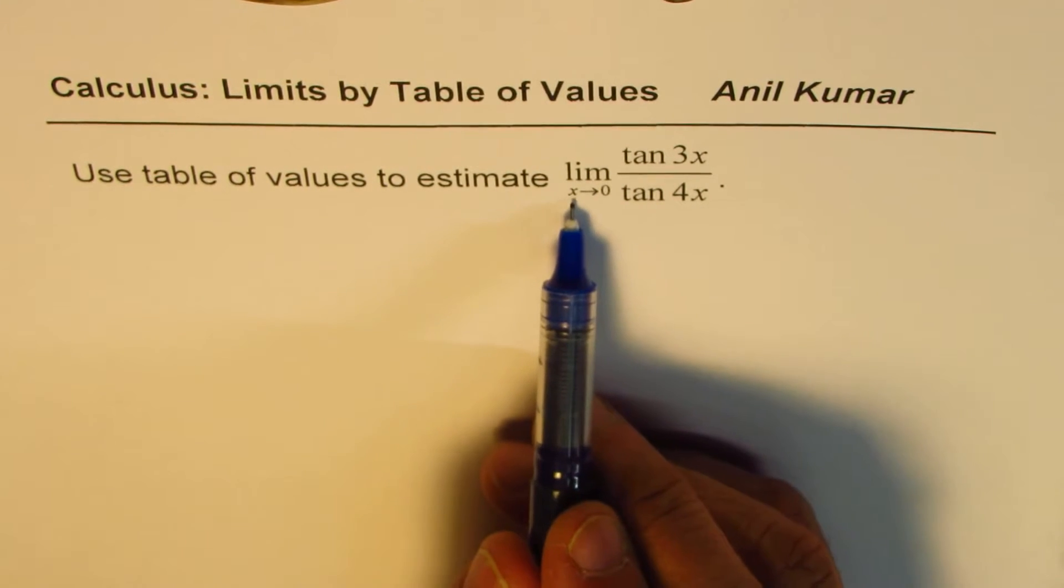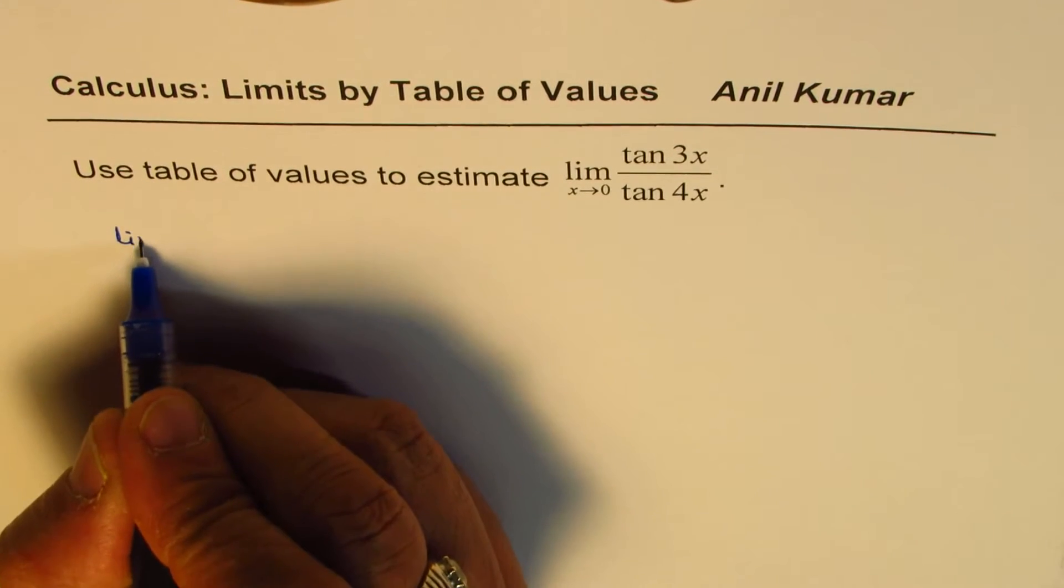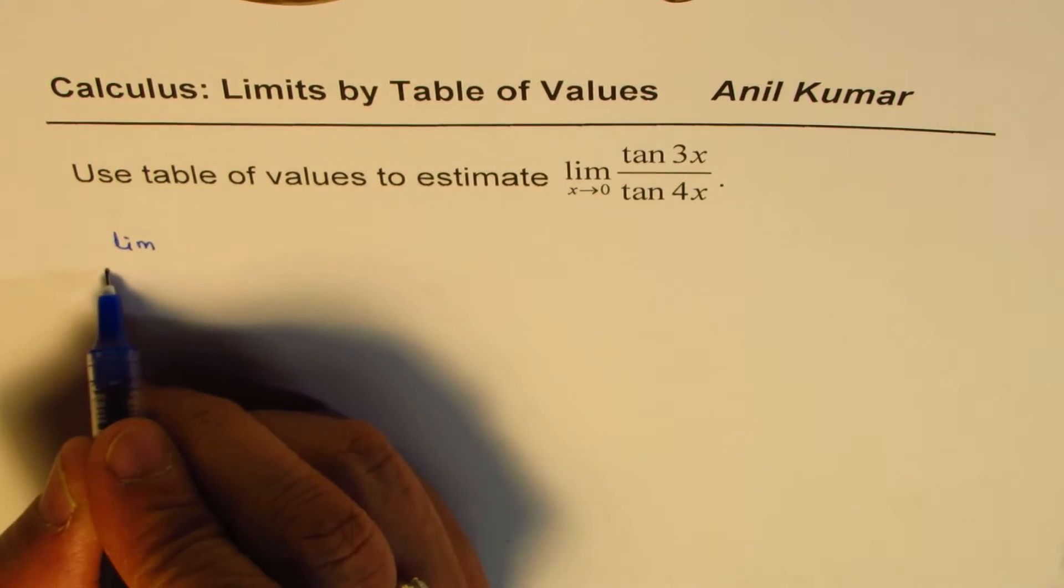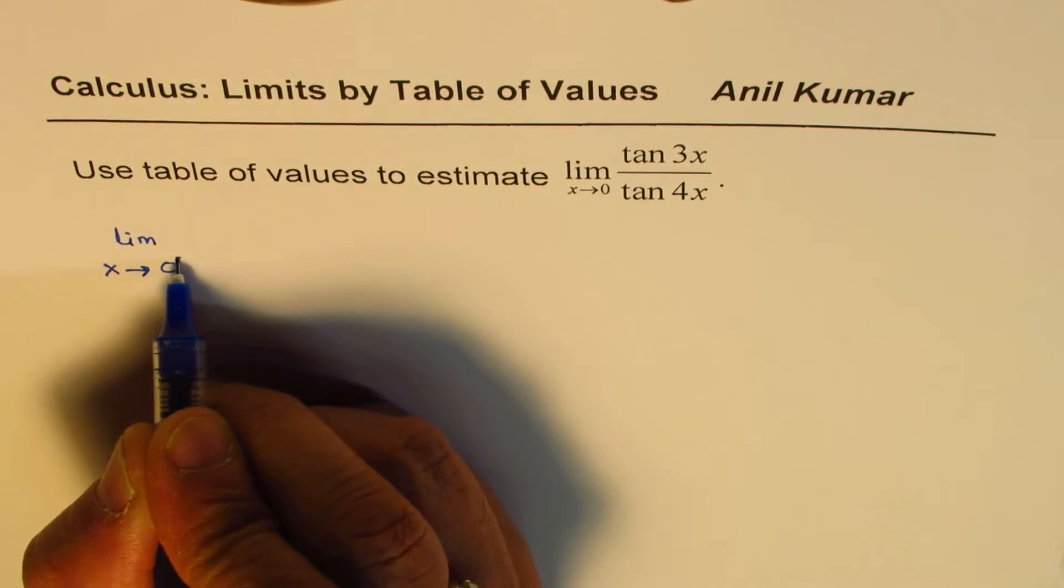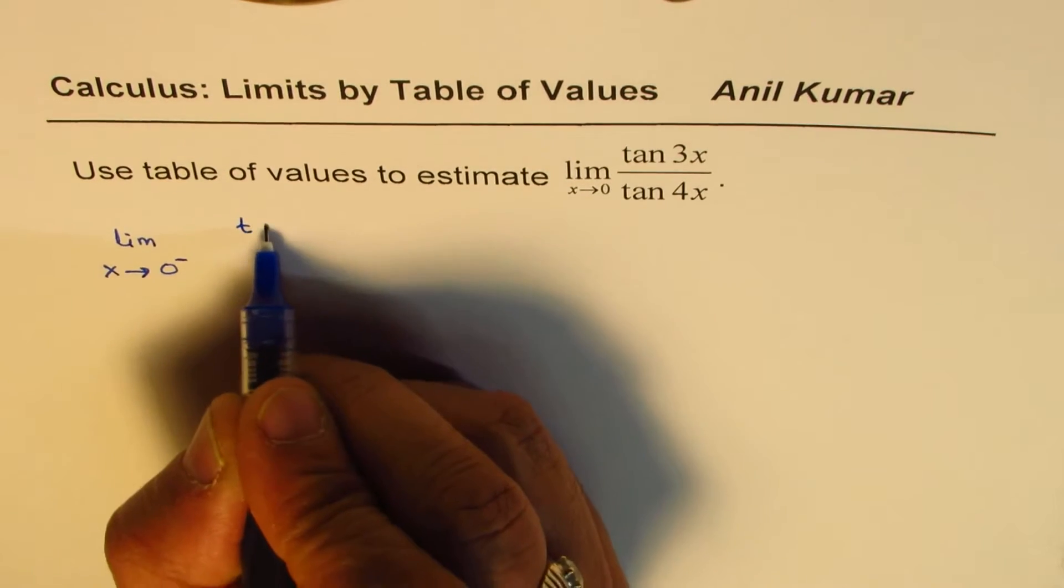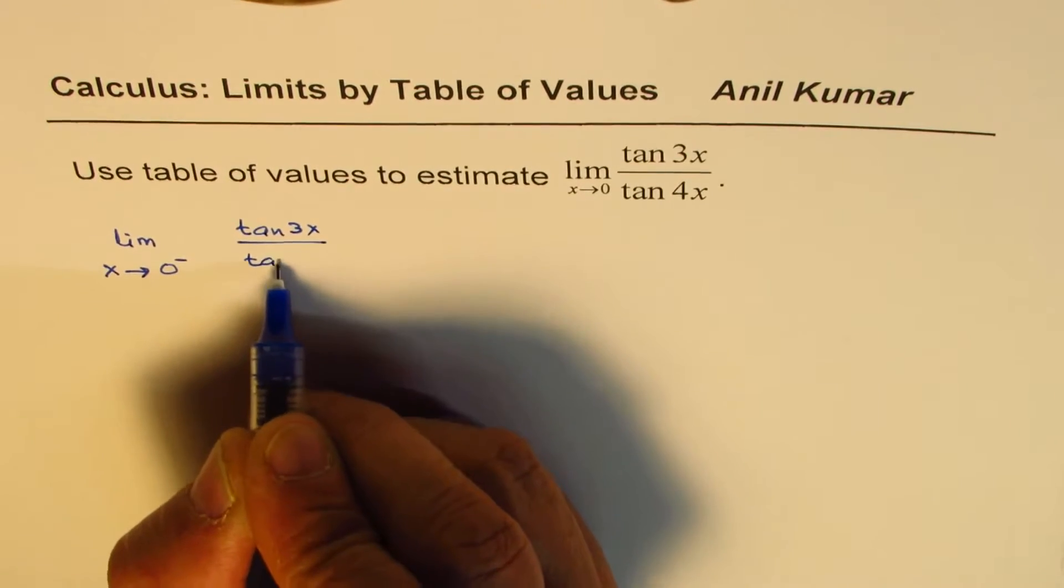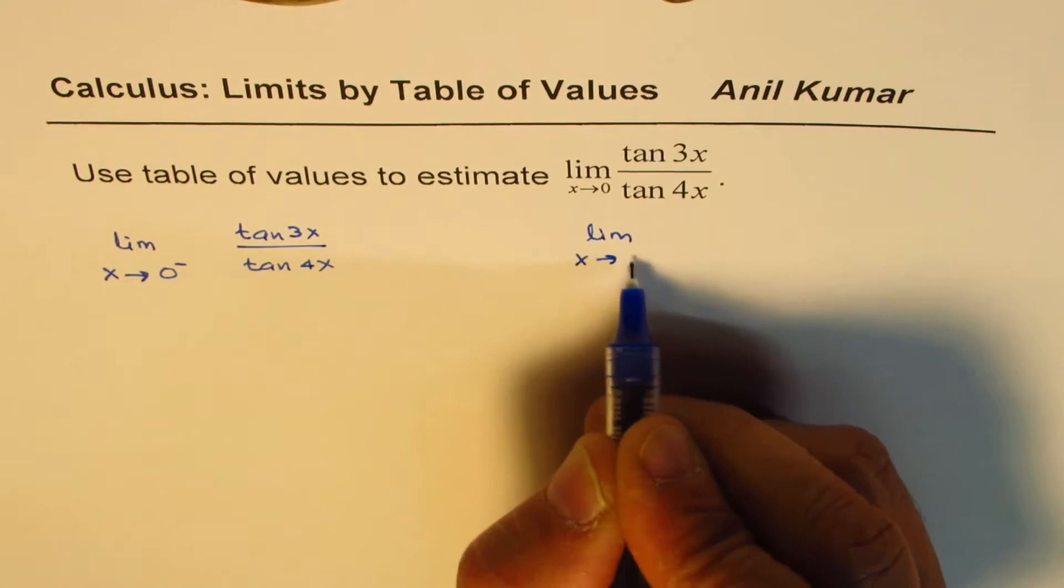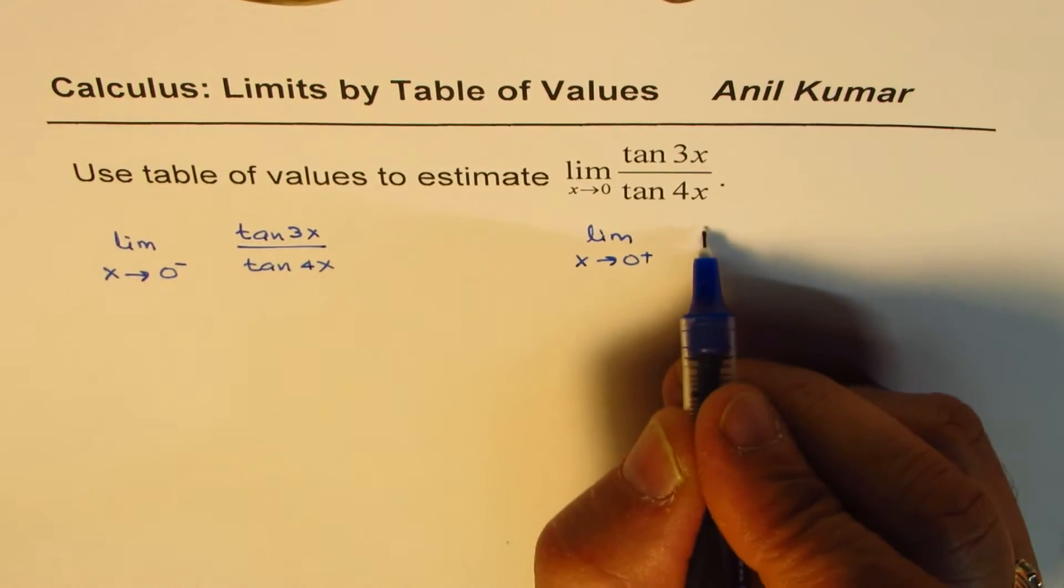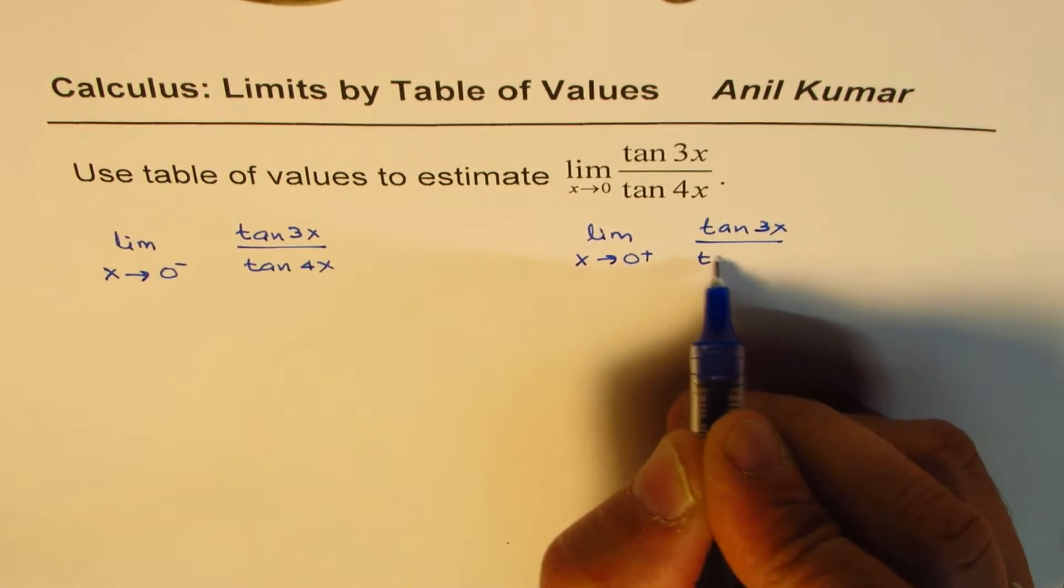Now to find the limit as x approaches 0 for the given function, we need to find limit from both left side and from right side. We will evaluate as x approaches 0 from the left side, that is minus, for tan 3x over tan 4x. And we'll also find the limit of the same function as x approaches 0 from the right side for tan 3x over tan 4x.